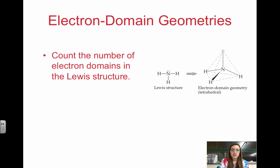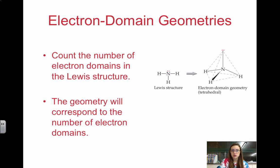To determine the electron domain geometry, we need to count the number of electron domains in the Lewis structure. The geometry will correspond to the number of electron domains. So with NH3, we have one, two, three, four electron domains around nitrogen, so it's tetrahedral.